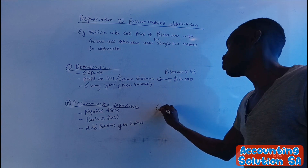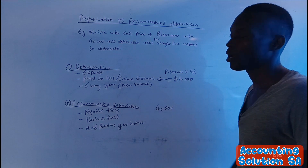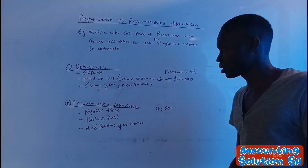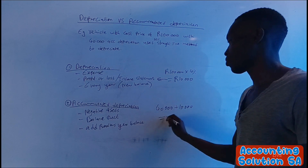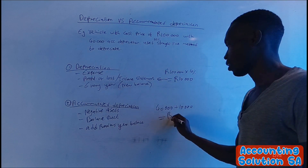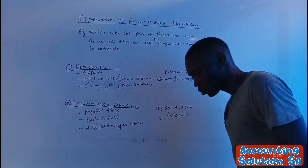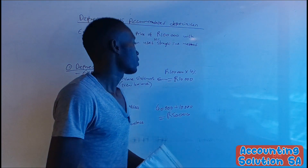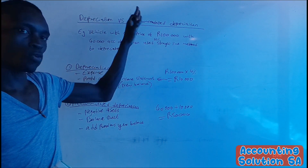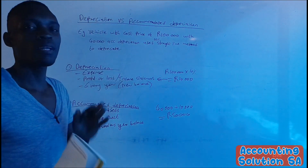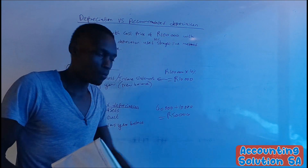Now for accumulated depreciation: we already have 40,000 from the previous year, but since we calculated this year's depreciation as 10,000, we add them together. 40,000 plus 10,000 gives us accumulated depreciation of 50,000. That is the difference between depreciation and accumulated depreciation.